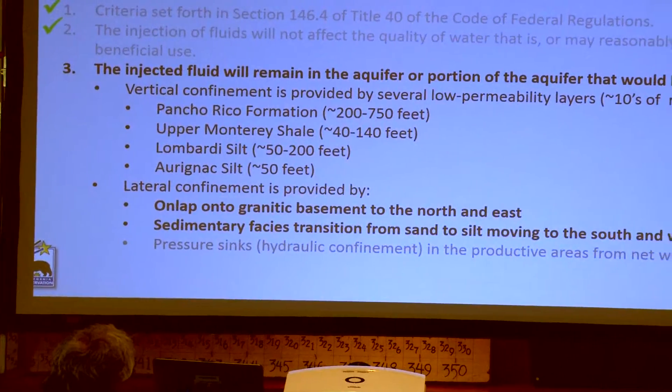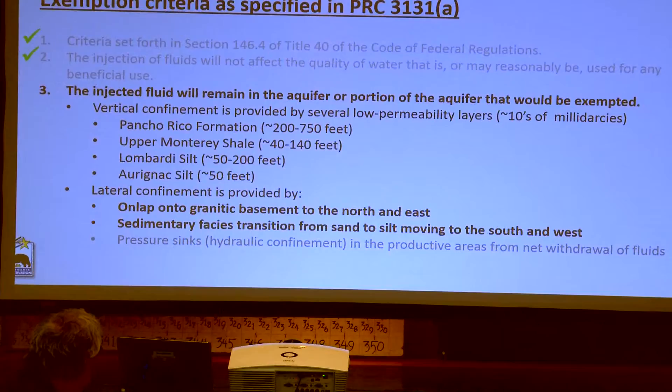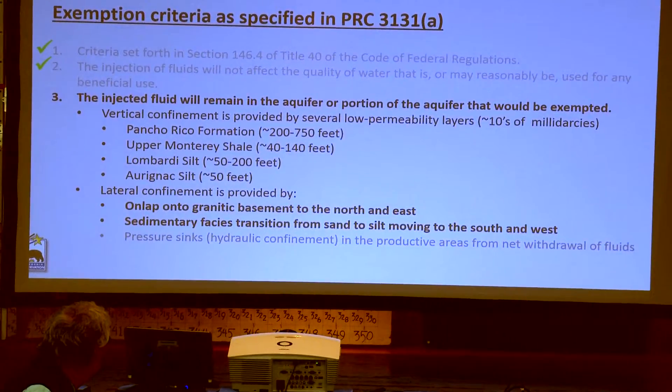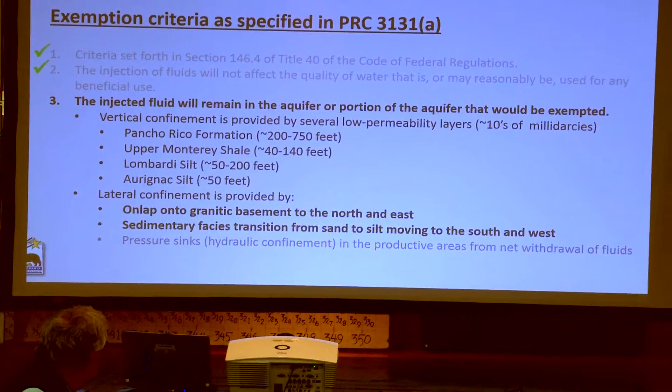Additionally, the water in the Lombardia and the Aranac is not expected to be used for any beneficial use. The third and final state criteria is that the injected fluid will remain in the aquifer or portions of the aquifer into which it's injected. There are several lines of evidence to suggest that injected fluid will remain in the Lombardia or the Aranac. We know there are many low permeability confining layers above the Lombardia, including the Pancho Rico formation, the upper Monterey Shale, the Lombardia silt, and the Aranac silt — each offering a barrier for migration of fluid up or down.